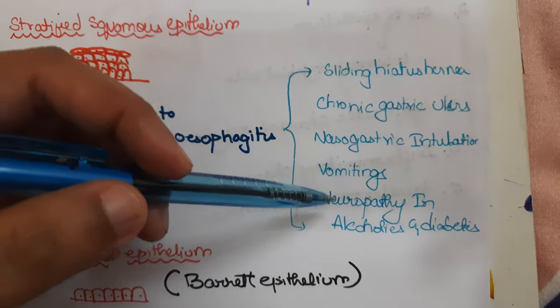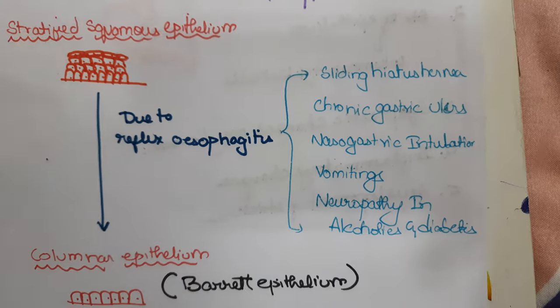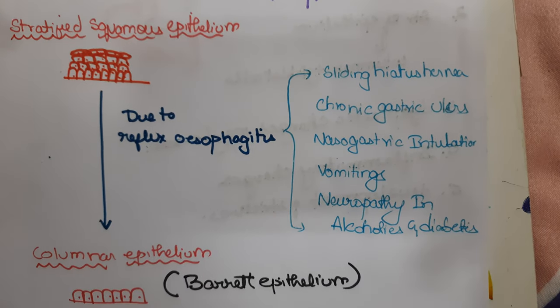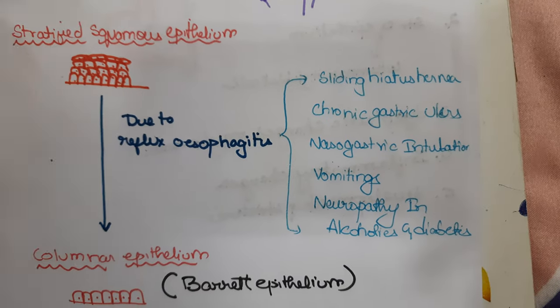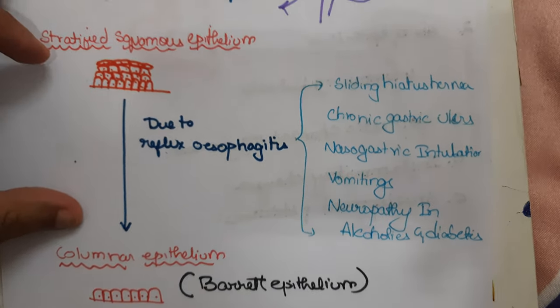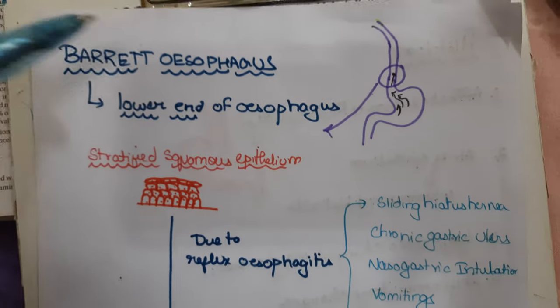Other causes of reflux esophagitis include nasogastric intubation, frequent vomiting causing reflux from the stomach into the esophagus, and neuropathy in alcoholics and diabetics, which can also cause reflux esophagitis.